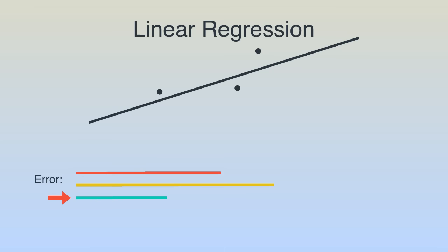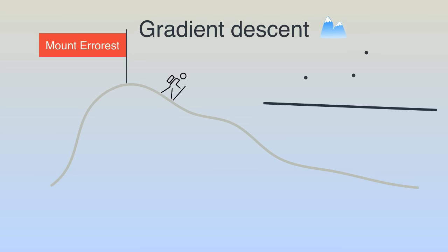This general procedure is known as gradient descent. In real life we don't want to deal with negative distances corresponding to a point being on one side or the other side of the line. So instead we add the square of the distance from the point to the line. This procedure is called least squares.